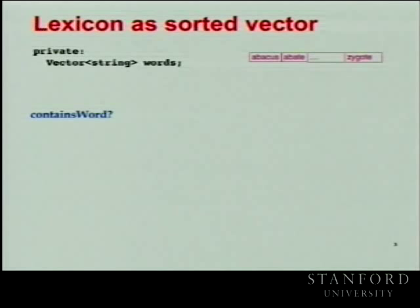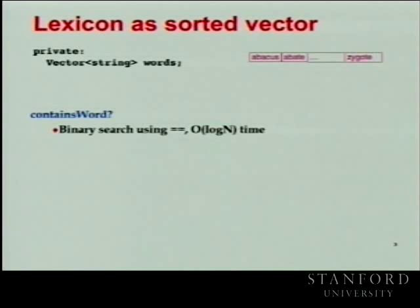To do a contains-word on this data structure, you'd use binary search — it's in sorted order, and a linear search would mean trucking through thousands of words before finding something like 'mediocre.' With binary search, comparing strings and dividing in half, it runs in logarithmic time. For entries of 100,000 or 500,000, that's basically free. For contains-prefix, we can do a fast prefix search using the same binary search, looking at substrings — only comparing the first few characters — to quickly narrow in on where it could be.